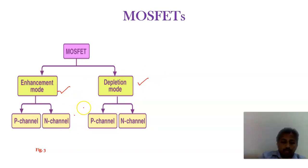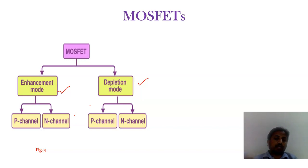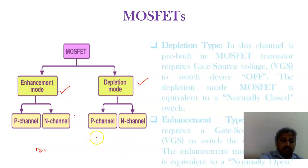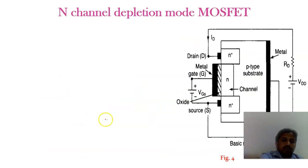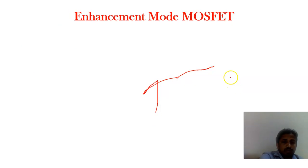In enhancement MOSFETs, the channel is not pre-established. For N-channel enhancement MOSFETs, once you give a positive supply, the channel will be established. In depletion MOSFETs, the channel is already created in the construction itself. Depletion MOSFETs are less commonly used; enhancement MOSFETs are primary. In the depletion MOSFET, a channel is already placed before operation begins. These are the characteristics of a depletion MOSFET.